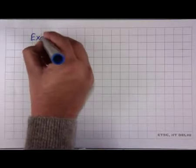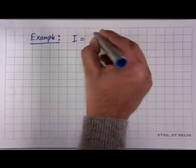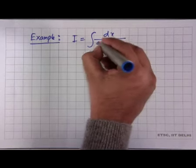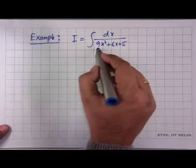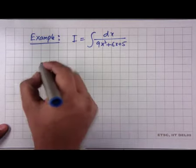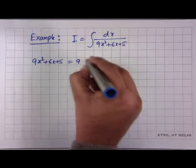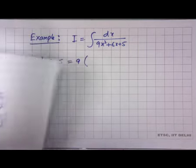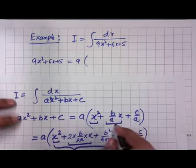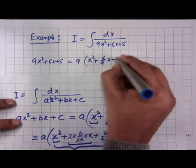Let us choose one example: find ∫dx/(9x²+6x+5). This is of the form ax²+bx+c. Taking 9 as common from the denominator, we write 9x²+6x+5 = 9(x²+(6/9)x+5/9) = 9(x²+(2/3)x+5/9).